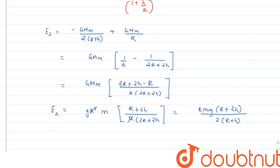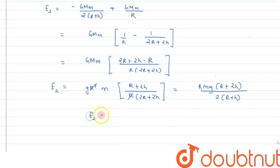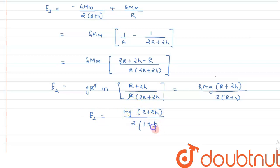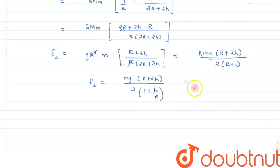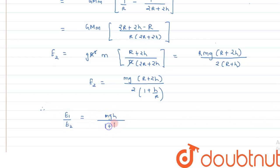Simplifying further, we take R out from the numerator: E2 = mgR(1 + 2h/R) — but more cleanly, E2 = mg(R+2h) / [2(1 + h/R)] after factoring. This is equation 2. We have now calculated both E1 = mgh/(1+h/R) and E2.